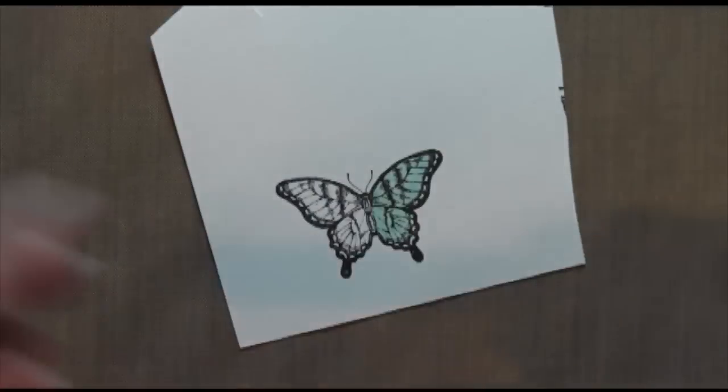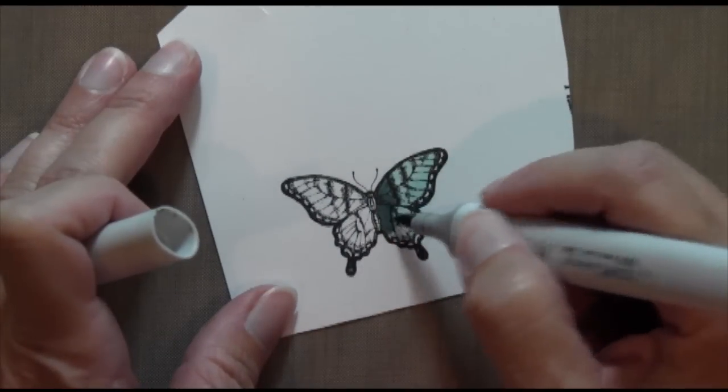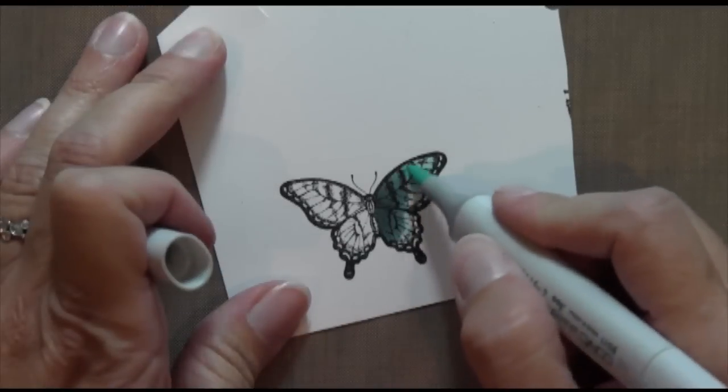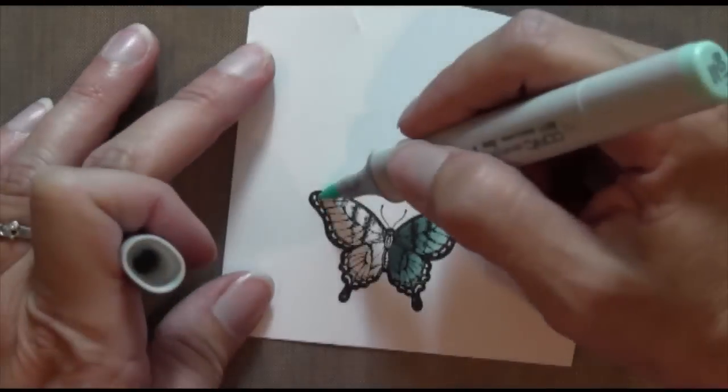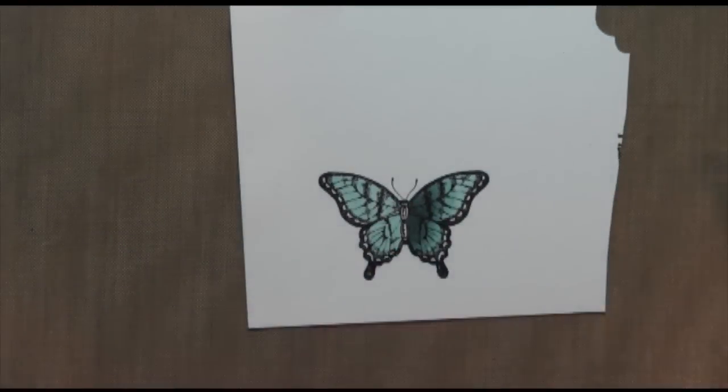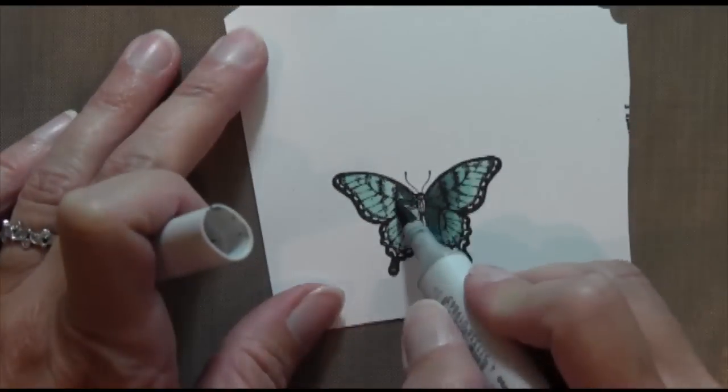The first is a light all over color. And then I'm going to take the darkest color, put it in the middle where the shading would be on the butterfly. Take that medium color, blend it out. Take the lighter color, blend it out. And I'm going to do the same thing on both sides. And I do one side at a time to make sure it doesn't dry and it will blend easily.